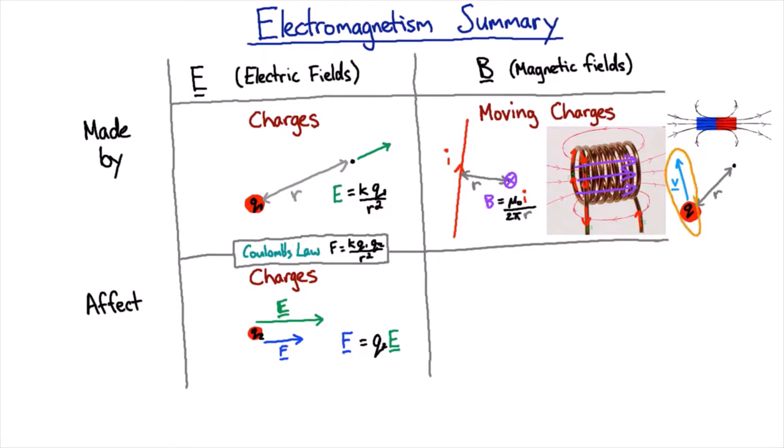And this moving charge here looks exactly like a current, and so we use essentially the same right-hand rule. For a positive charge we put our right thumb along the velocity and then our fingers curl down, and so we can see that the magnetic field in that case would be going again into the page.